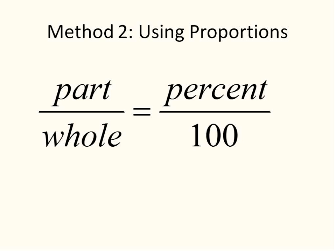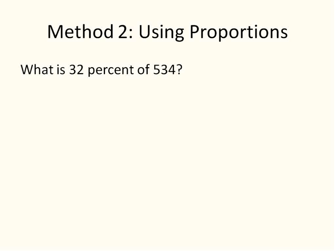Method number two is to use proportions. You'll set up a proportion: the part over the whole equals the percent over 100. And this is the proportion that you'll use for every single type of question. So let's look at solving a question using proportions. We'll use the same question: What is 32% of 534? I'm going to put the part over the whole is the percent over 100.